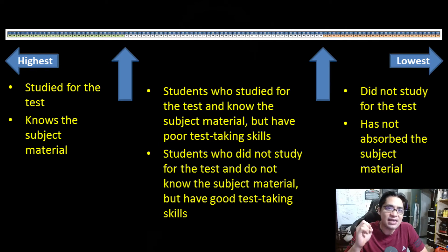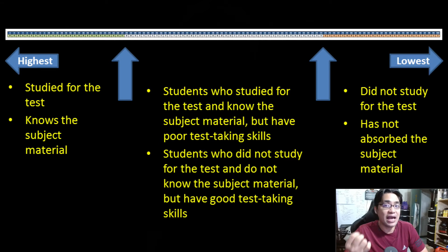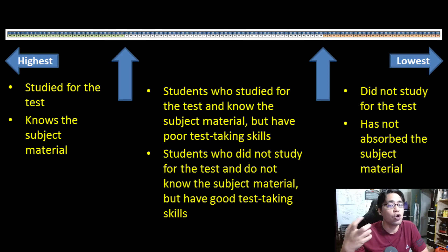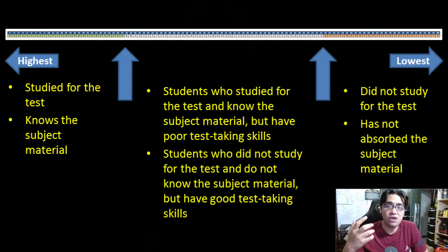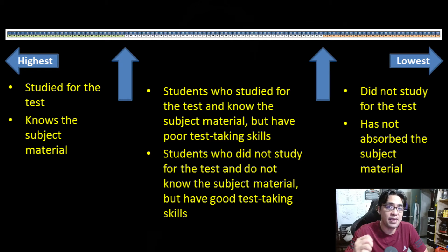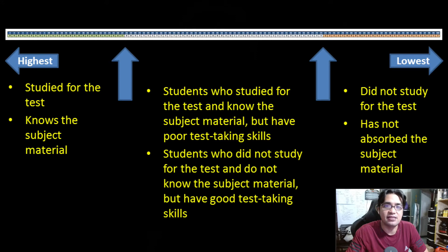We only assess the extremes. We take the students with the highest scores — called the high group — and the students with the lowest scores — called the low group — and assess just them. That way, we can assess item difficulty based on knowledge of the subject material and not based on comprehension or test-taking abilities.